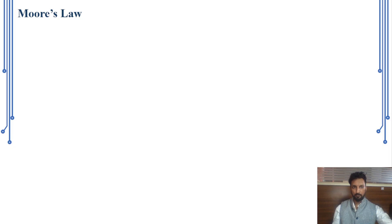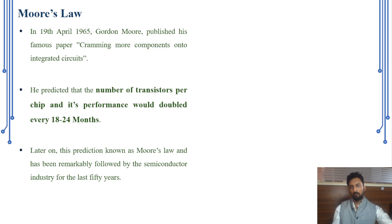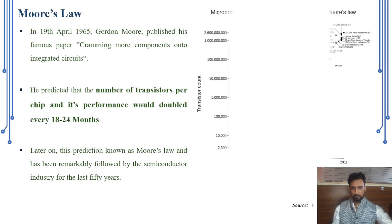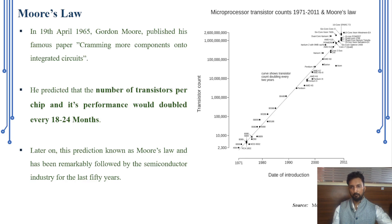It all starts with Moore's Law. Gordon Moore, who initially worked at Fairchild Semiconductor before co-founding Intel with Robert Noyce, predicted in 1965 that the number of transistors on a chip and its performance would double every 18 to 24 months. Astonishingly, this prediction held true for a very long period of time, and it is known as Moore's Law.